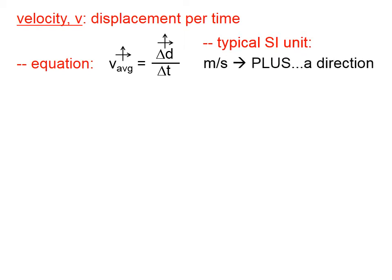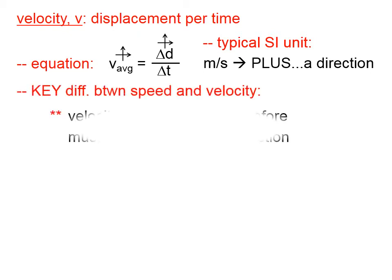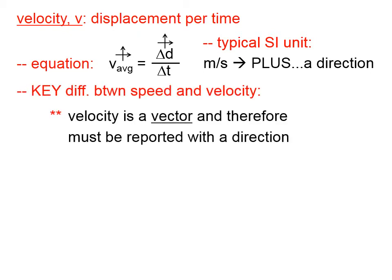So the typical SI unit for velocity would be meters per second, plus a direction, because velocity, like displacement, is a vector, and all vectors need to have a direction.